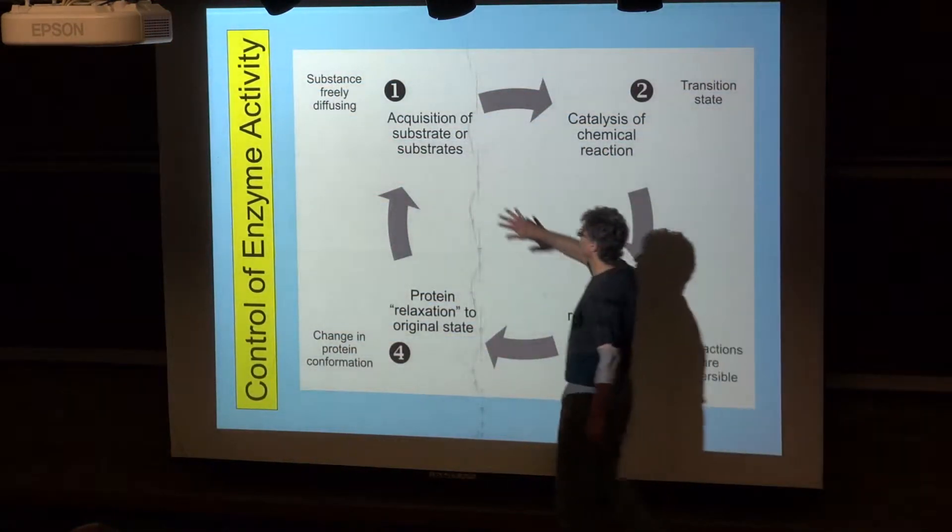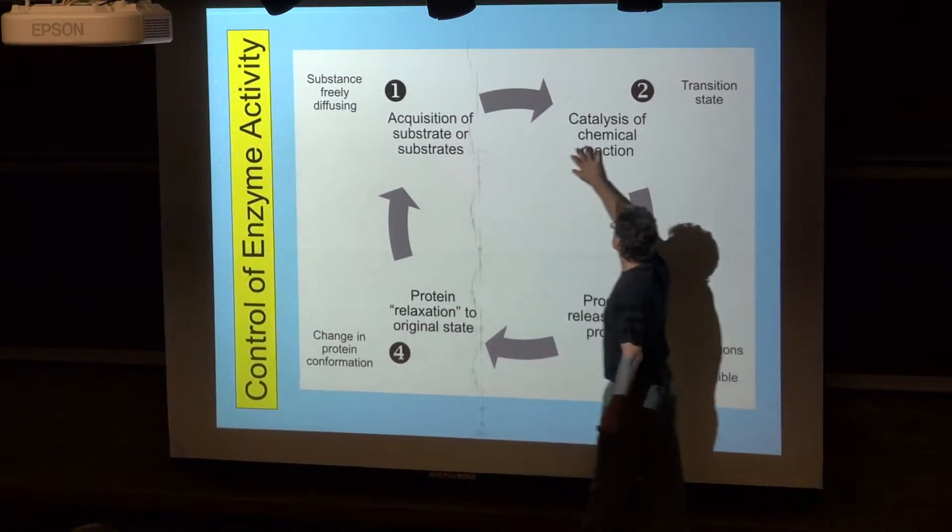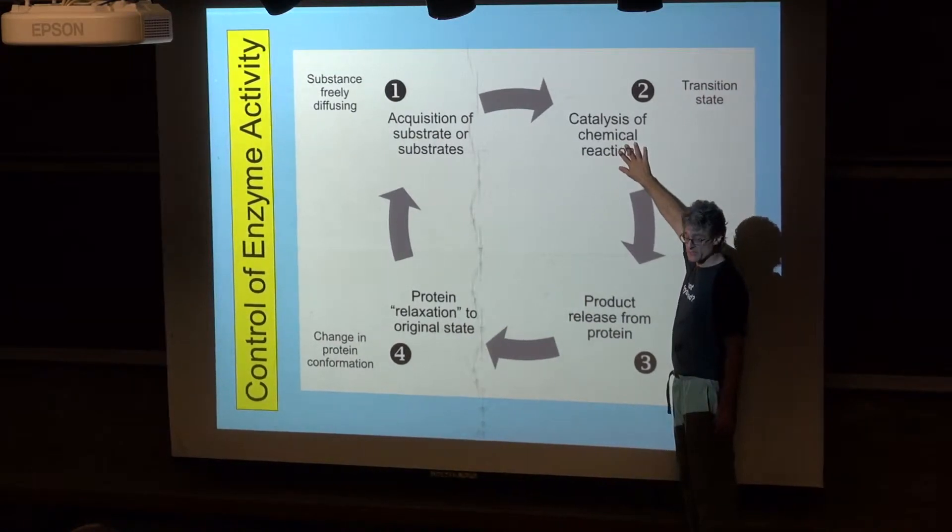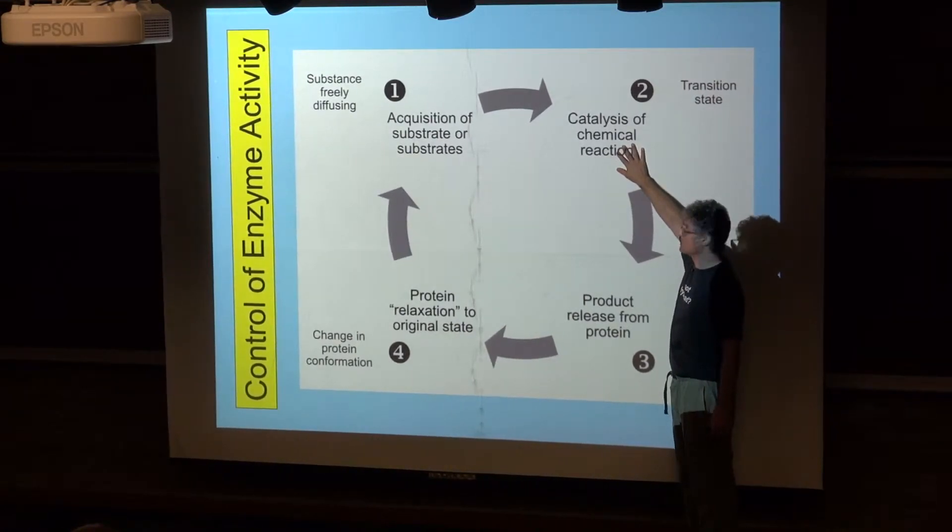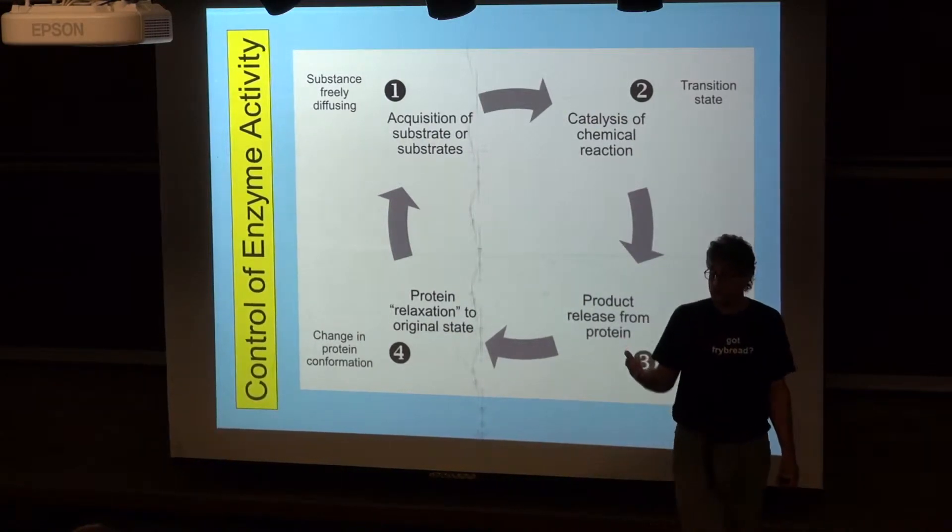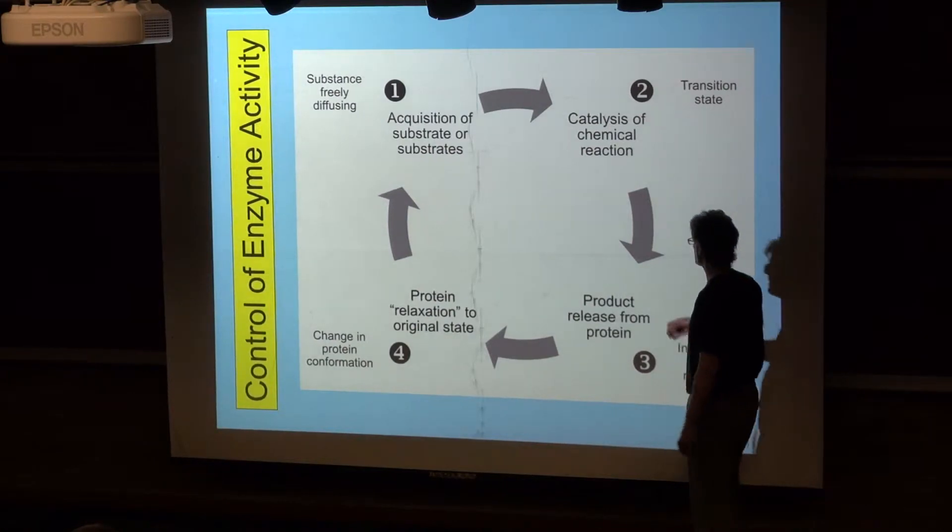Acquisition of the substrate or substrates causes a change in the shape of the enzyme that directly results in catalysis. The catalyzation of the reaction is a consequence of these changes in shape of the enzyme.